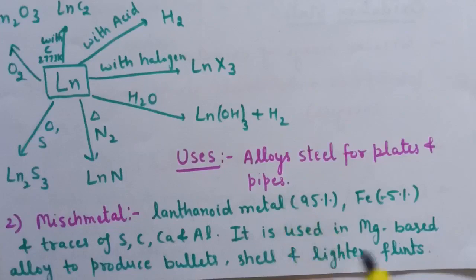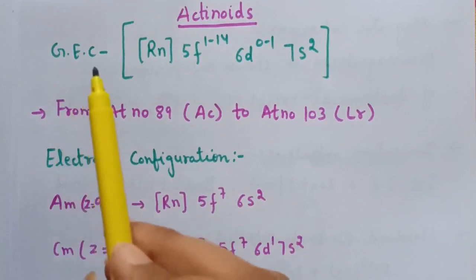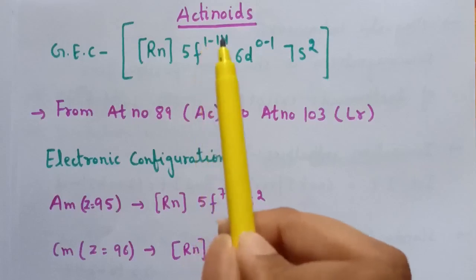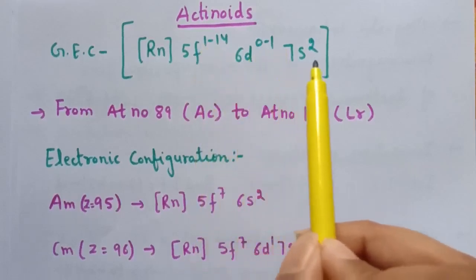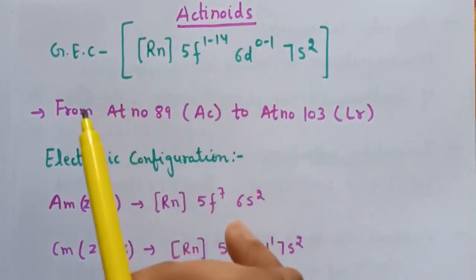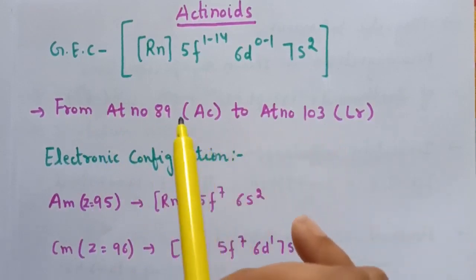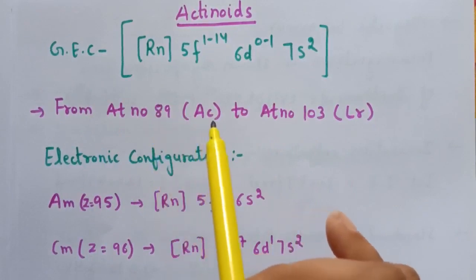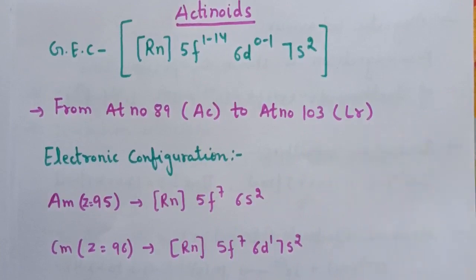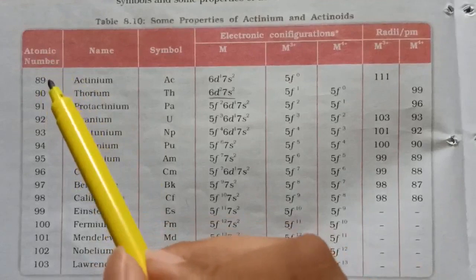Next we start with actinoids. The general electronic configuration for actinoids is [Rn] 5f¹⁻¹⁴ 6d⁰⁻² 7s². Actinoids range from atomic number 89 to 103 — that is, actinium (89) to lawrencium (103, symbol Lr). There are 14 elements in the actinoid series.